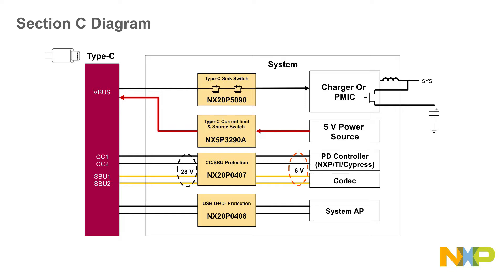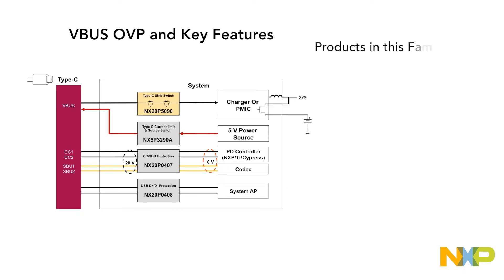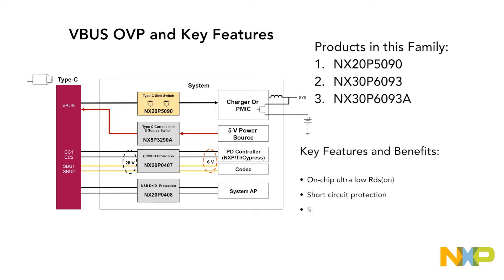Our load switch family is vast. Let's look at what you can get with each of our different application families. Our VBUS OVP family includes the NX20P5090, the NX30P6093, and the NX30P6093A. These switches feature VBUS overvoltage protection and surge protection, utilizing a Type-C sync switch. These switches are equipped with an on-chip ultra-low RDSON, short circuit protection from VIN to VOUT, slew rate control for the inrush current limit, and an input discharge path for USB PD specifications.